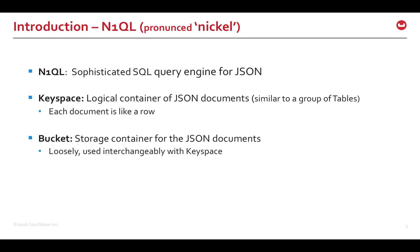N1QL is a sophisticated query language for Couchbase Server with SQL extensions for JSON — for example, to include nested and multi-valued data of JSON. Keyspace is a logical container of JSON documents, which is similar to a group of tables in relational databases, and each JSON document is like a row.